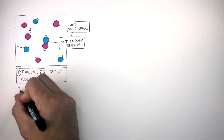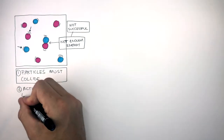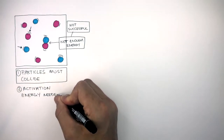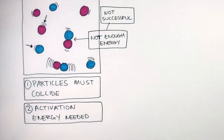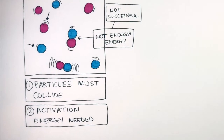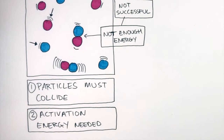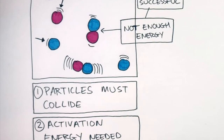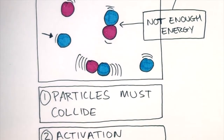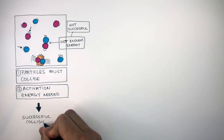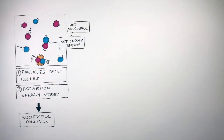For a successful collision, the activation energy is needed. This is the minimum amount of energy required for a reaction to take place. Now if these two particles collide and they both have the activation energy, as shown by the extra vibration lines, then a successful collision can take place.